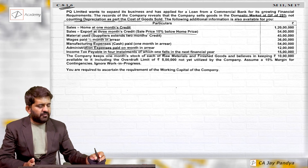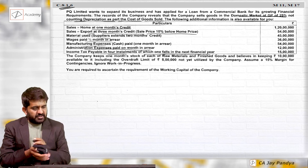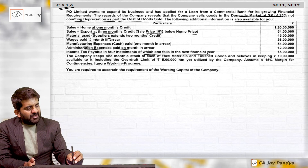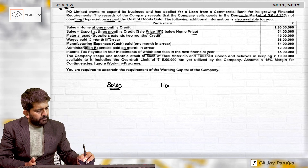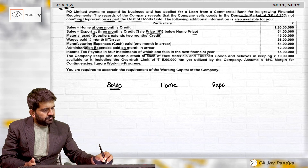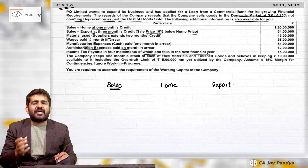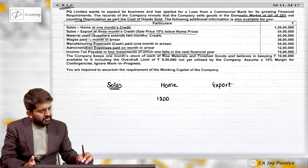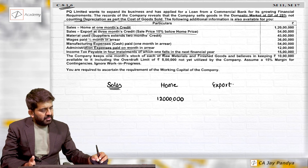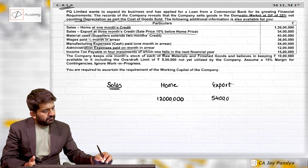We are required to ascertain the working capital requirement. Data is the challenging point; otherwise everything is simple. Sales are in two parts: home and export. If we take sales at selling price the question becomes easy, but let us take sales at cost price. Home sales is 1 crore 20 lakhs, export sales is 54 lakhs.